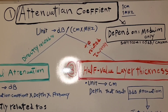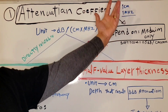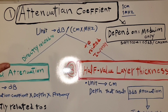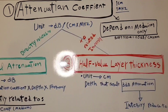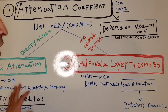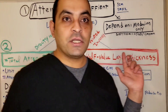The unit for attenuation coefficient is decibels per centimeter times megahertz. A tricky SPI exam question may ask: if the frequency increases or the depth decreases, what will happen to the attenuation coefficient? The answer is nothing will happen, because the attenuation coefficient depends only on the medium. It will only change if you change the medium.